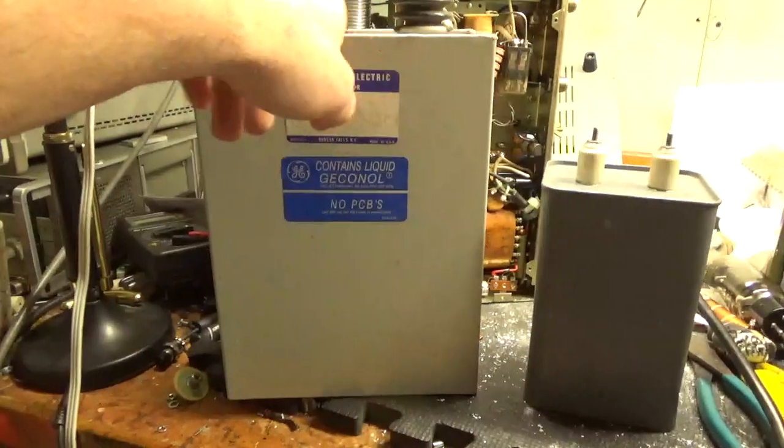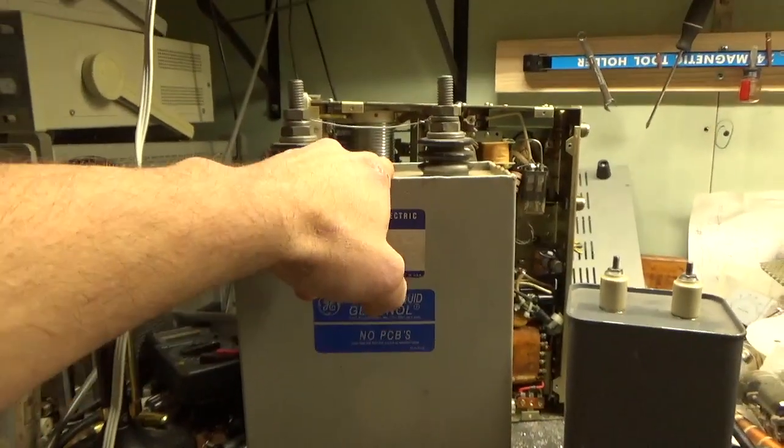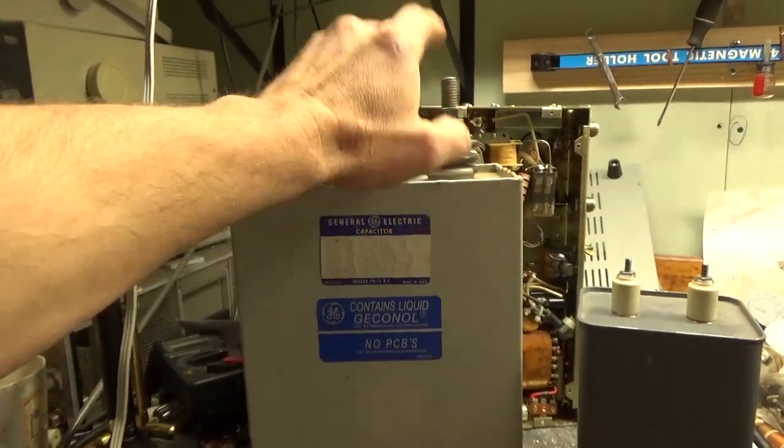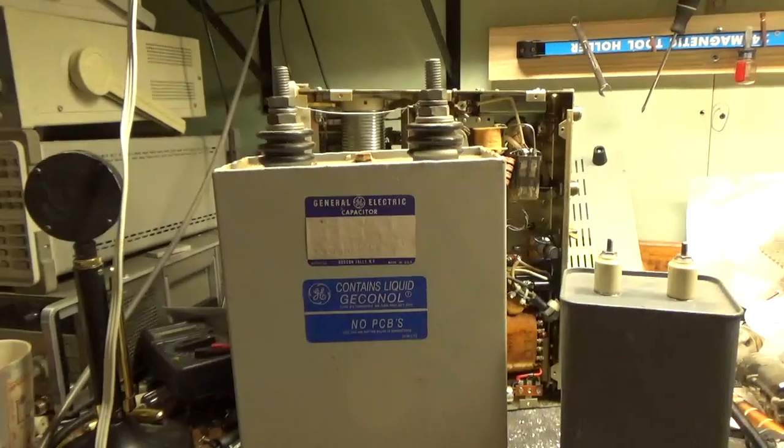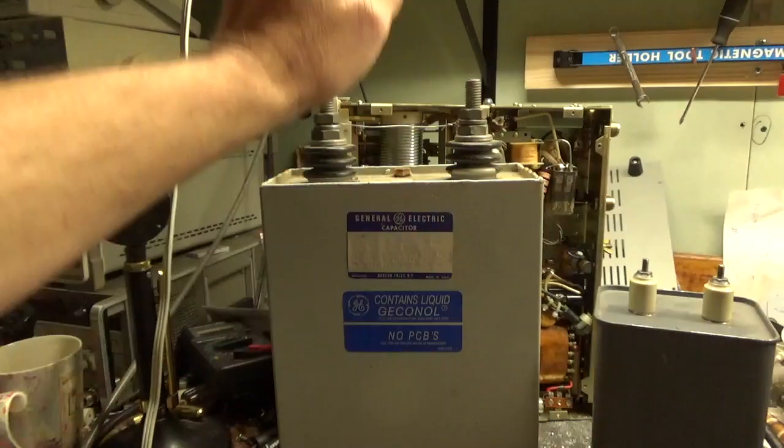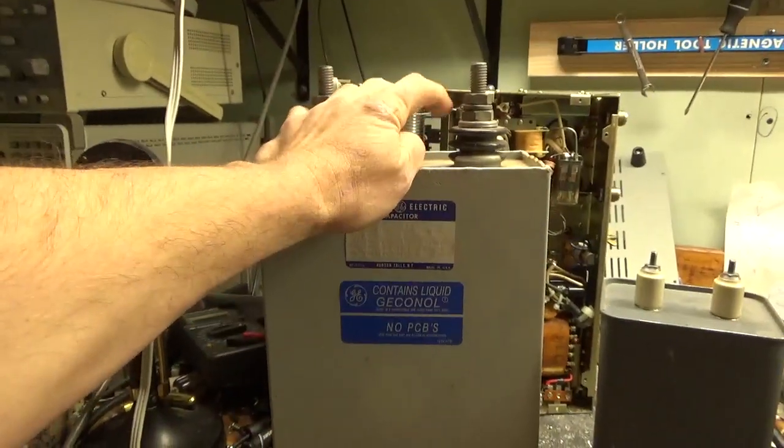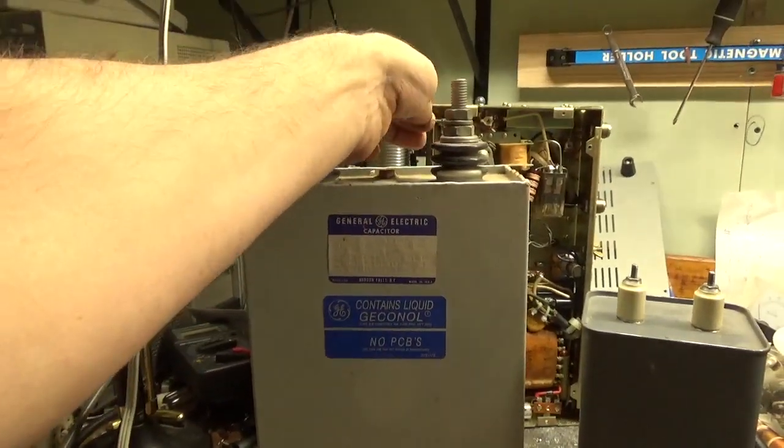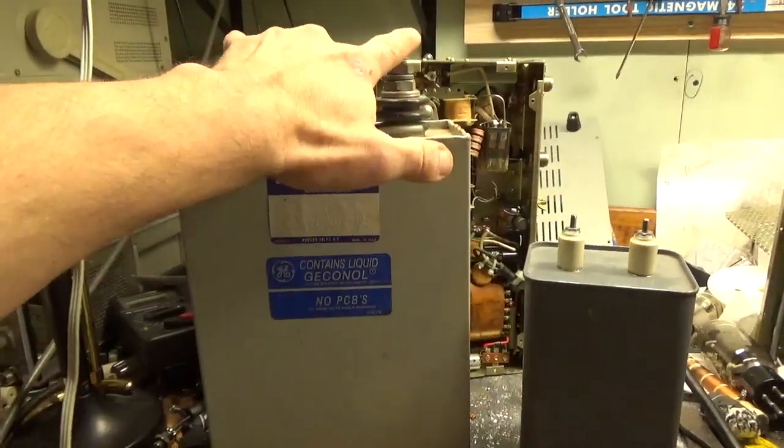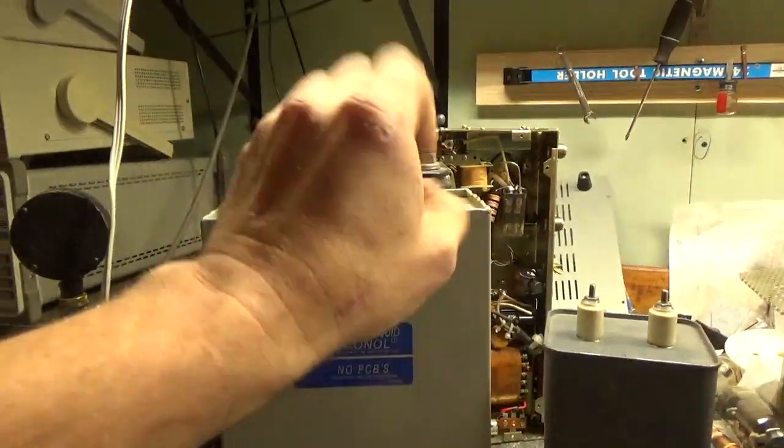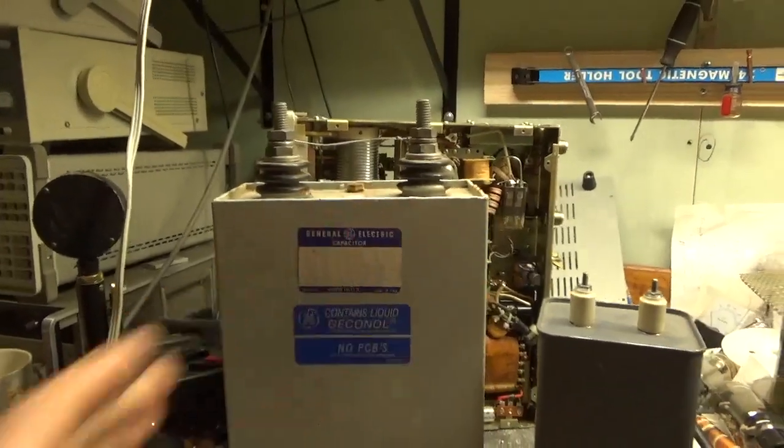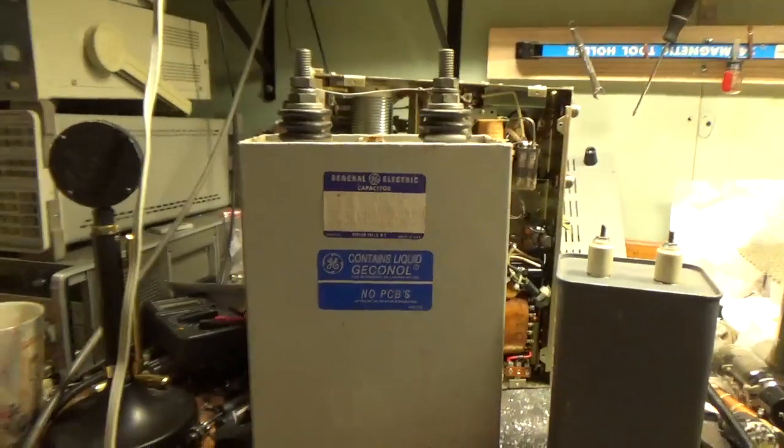You always want to put a wire across the capacitor that's in storage because believe it or not they can actually charge up from the static electricity in the air. One time I had a 40 microfarad one of those Russian ones, 40 microfarad 5 kV pulse caps, and it was at a guy's house I was buying a bunch of parts and stuff. He had it above his garage and I picked the cap up from the side and I touched the terminals to a piece of metal and boom, just a major spark. It charged up from the static electricity in the air and that may have killed me if I had touched it.